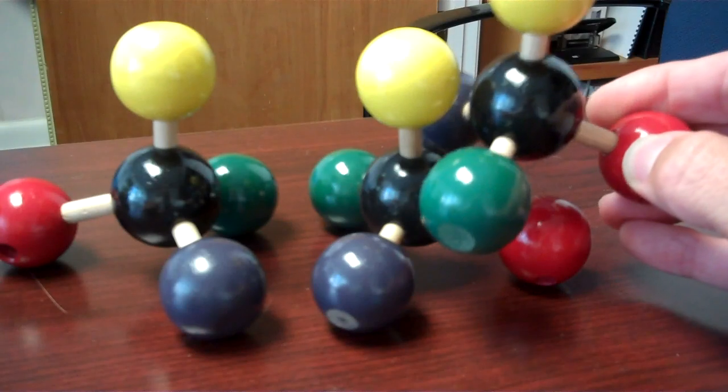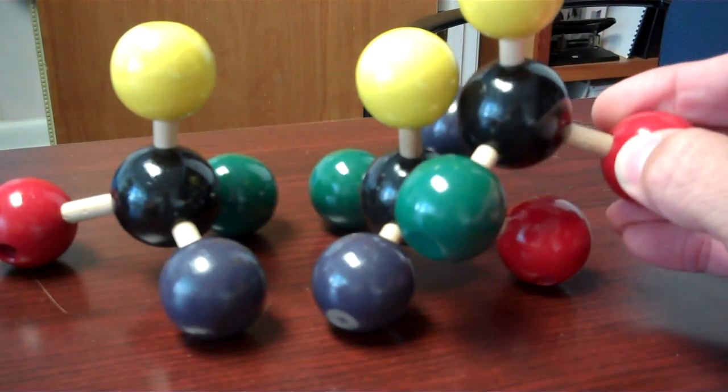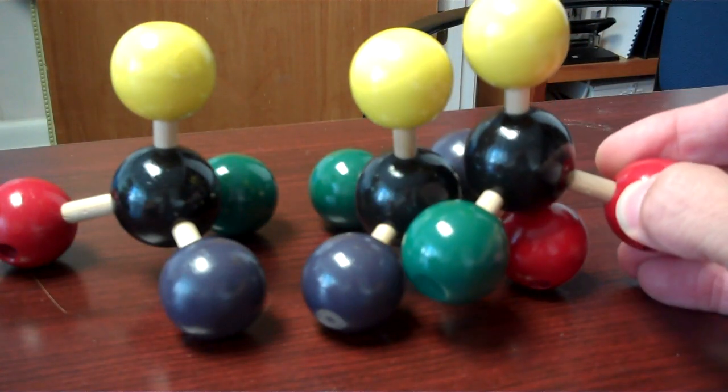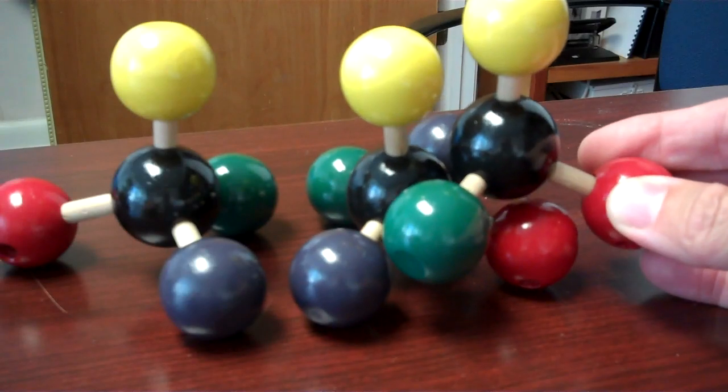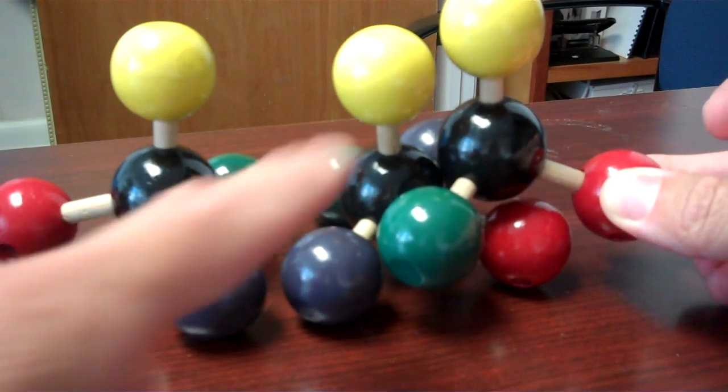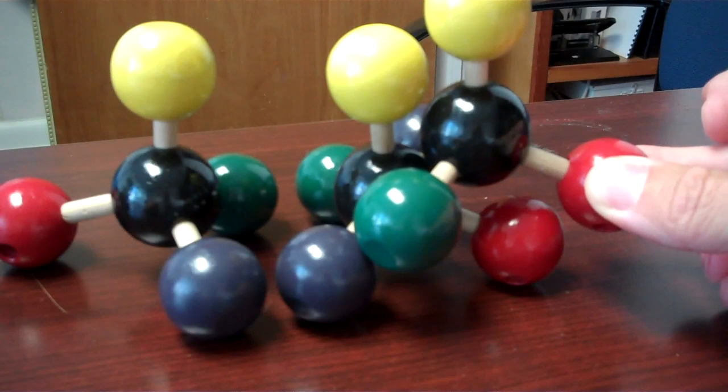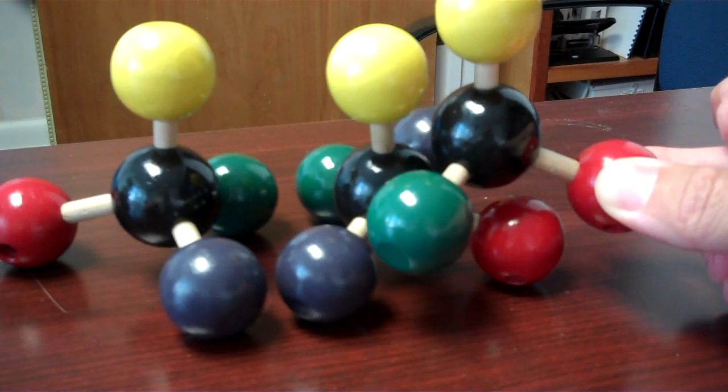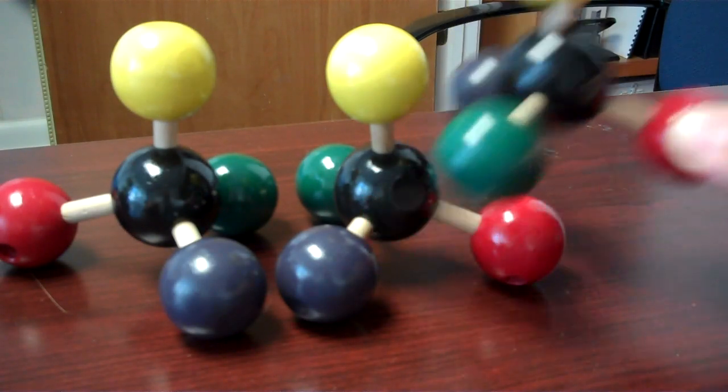And I can test for that superimposability to figure out for this third one which one it matches up with. And I can see I can get the yellow and red atoms to match up when I'm trying over here on the right hand side. But notice the green and the purple do not match up. So that must mean that these are not identical.